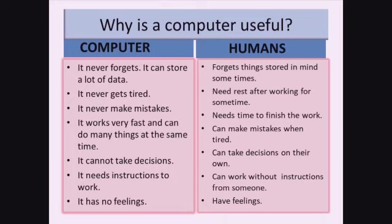A computer never makes mistakes and works very fast, doing many things at the same time. But humans can make mistakes when tired and need more time to finish work. A computer cannot take decisions on its own, but humans can. A computer needs commands to work, but humans can work without commands. A computer has no feelings, but humans do.